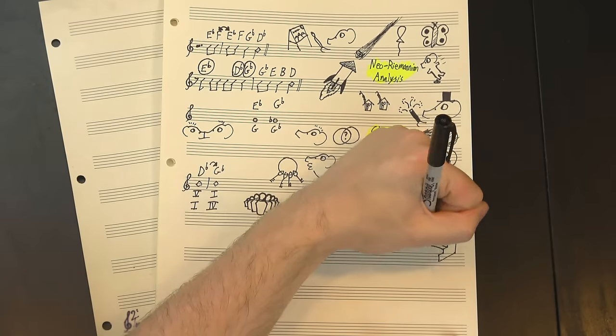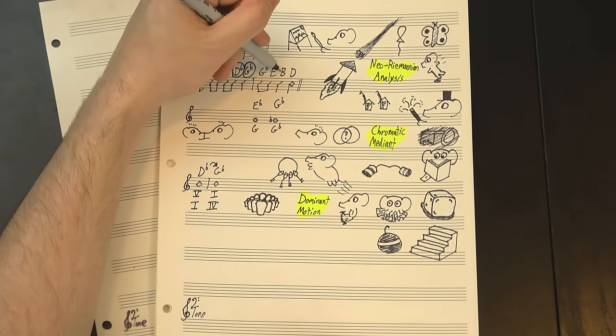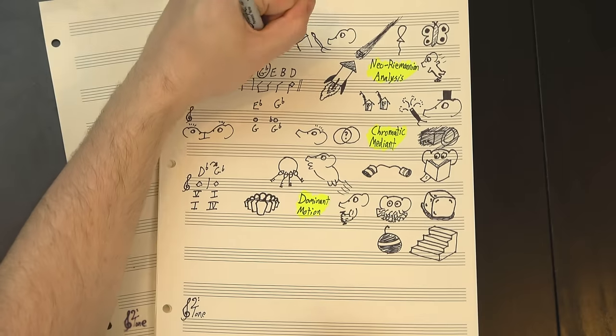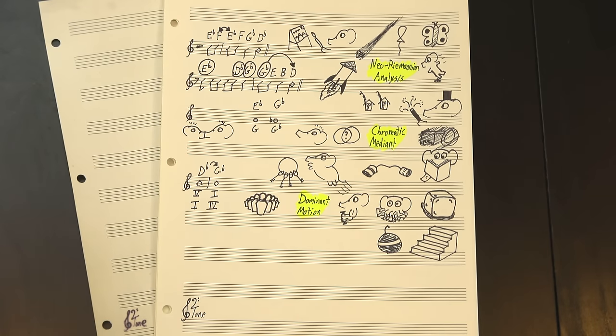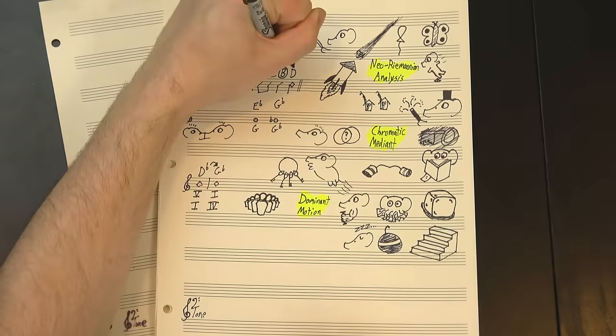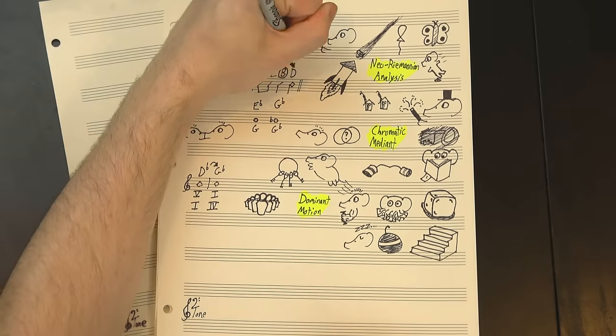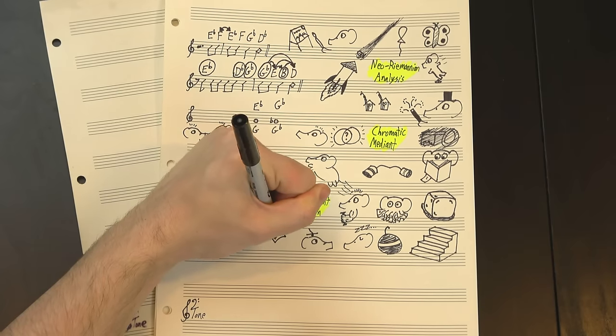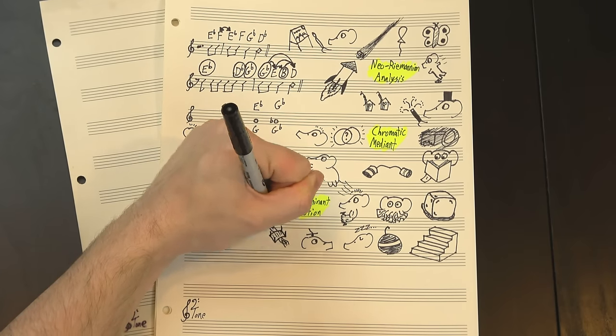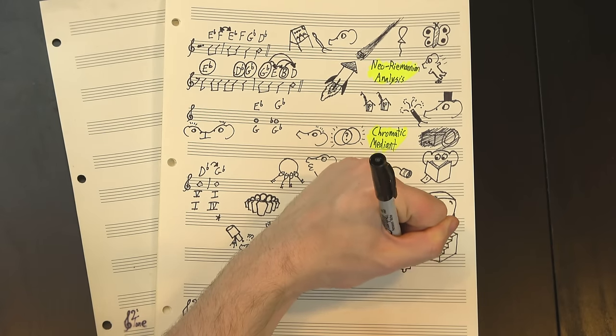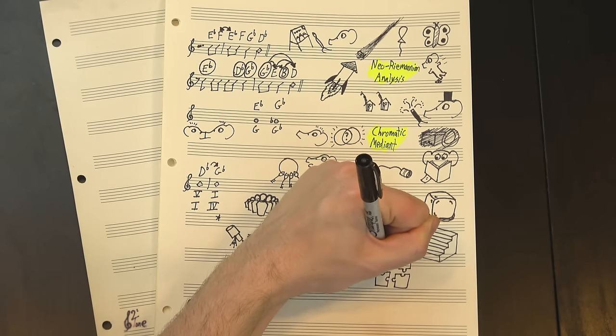In the last bar, we've basically just got a walkdown with some fancy decoration. Effectively, we're starting on that G-flat chord again and sliding down to D major, kind of like the reverse of the walkup we started with. But if we just walked straight down, it'd sound boring, so they throw an unexpected B chord in the middle. Moving from E to B is dominant motion, and B to D is another chromatic mediant, so now that we know about Neo-Riemannian theory, we can pretty safely say that both of those motions are close, and thus smooth. This section may be full of chords we're not used to seeing next to each other, but with a little understanding of atonal harmony, it all fits together nicely.